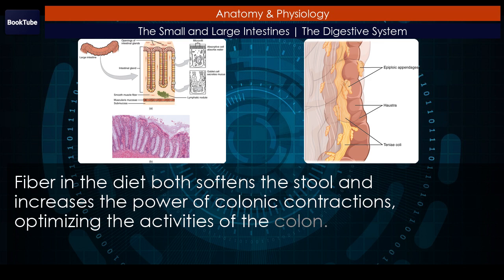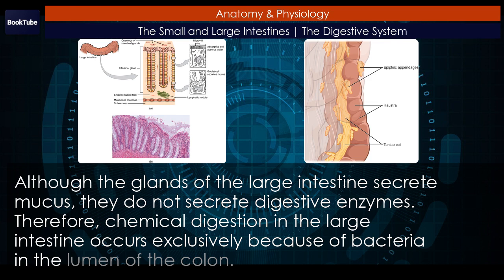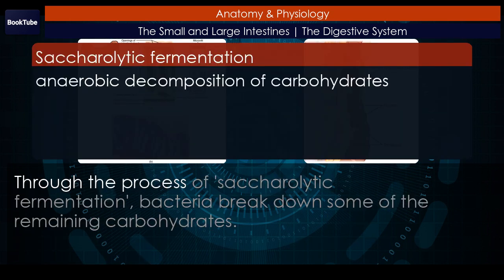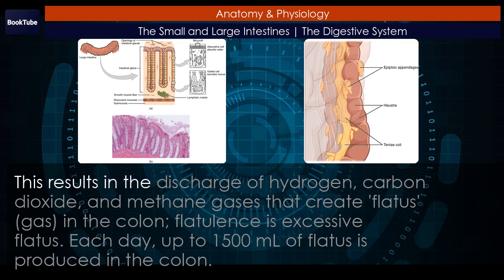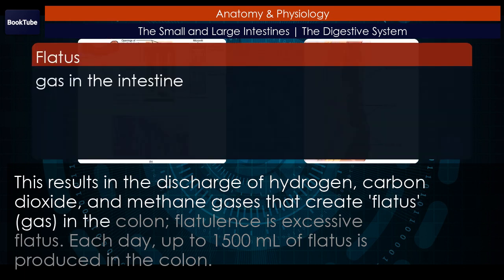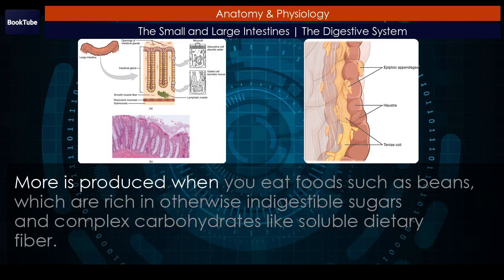Chemical digestion. Although the glands of the large intestine secrete mucus, they do not secrete digestive enzymes. Therefore, chemical digestion in the large intestine occurs exclusively because of bacteria in the lumen of the colon. Through the process of sacrolytic fermentation, bacteria break down some of the remaining carbohydrates. This results in the discharge of hydrogen, carbon dioxide, and methane gases that create flatus (gas) in the colon. Flatulence is excessive flatus. Each day, up to 1,500 milliliters of flatus is produced in the colon — more is produced when you eat foods such as beans, which are rich in otherwise indigestible sugars and complex carbohydrates like soluble dietary fiber.